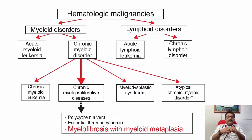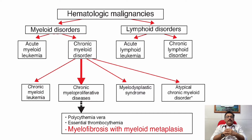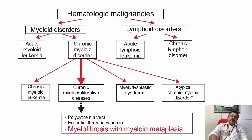When we classify leukemia, hematological malignancies are classified into myeloid disorders and lymphoid disorders. In myeloid disorders we have acute myeloid leukemia; in lymphoid disorders we have acute lymphoid leukemia. Chronic myeloid disorders are further classified into chronic myeloid leukemia, myelodysplastic syndrome, atypical chronic myeloid disorder, and chronic myeloproliferative disorders — including polycythemia vera, essential thrombocythemia, and myelofibrosis. Chronic lymphoid leukemia is also present under chronic lymphoid disorders.